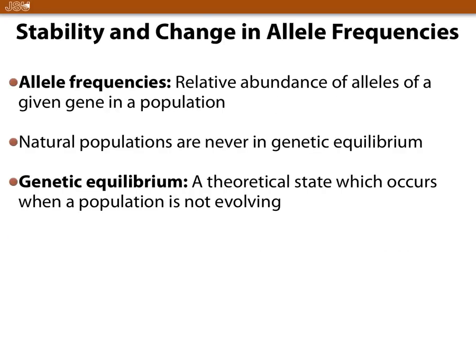Know the definition of allele frequency. Genetic equilibrium is when populations do not change — if something is in genetic equilibrium, that population is not evolving. No population can truly be in genetic equilibrium, because for one, there would have to be no mutation, and we know through DNA replication that mutations do happen, rarely but they do. We use genetic equilibrium as a standard — how far something is from it tells us how fast that population is changing.